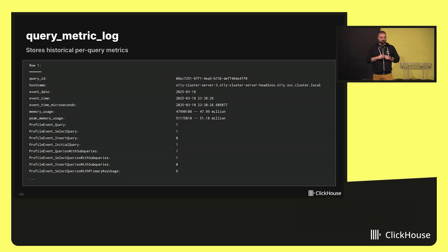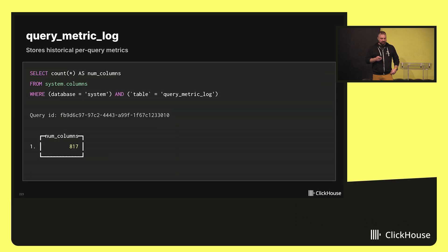Let's take a look, for instance, at the query metric log system table. It keeps a history of different measurements — different metrics — on a per-query basis. Each query is unique, and we track detailed metrics for every single one. In that case, the amount of distinct data points grows really fast, and we end up with just trillions of events. To give you the sense of scale: for each query, if we look at the number of columns in this table, we collect about 800 for every single query. It covers memory locations, different profiling stats, what aggregations were used, and so on.